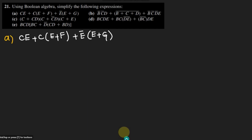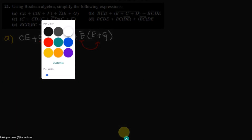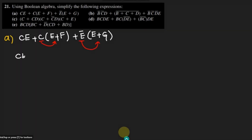Before solving it, what we have to do is multiply this C with all the terms which are inside this bracket, and also this E with all the terms which are inside this bracket. So multiplying them, what I will get here is CE plus CF, similarly E prime dot E plus E prime G.